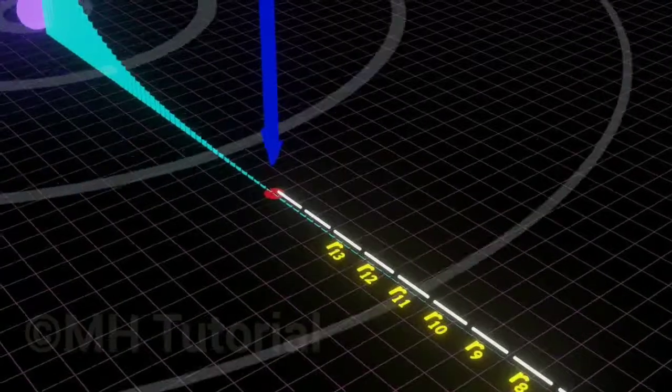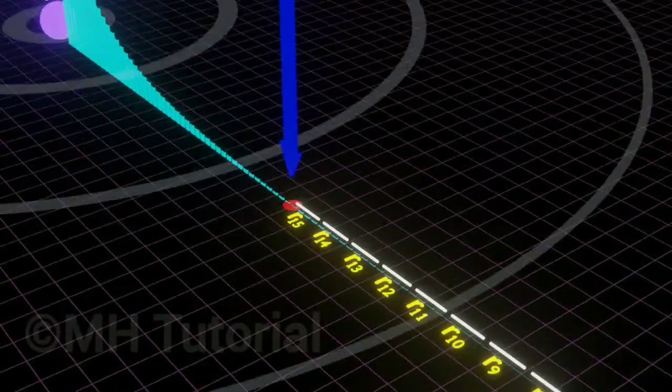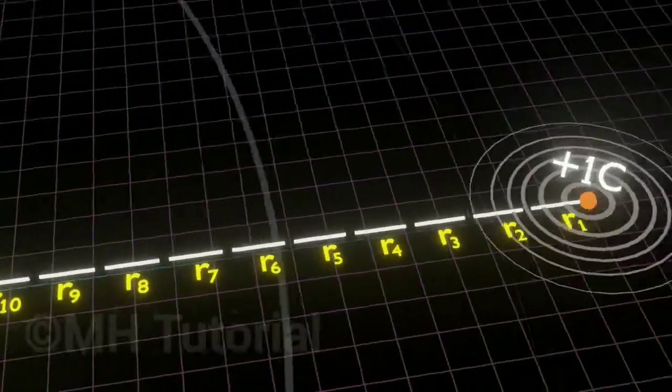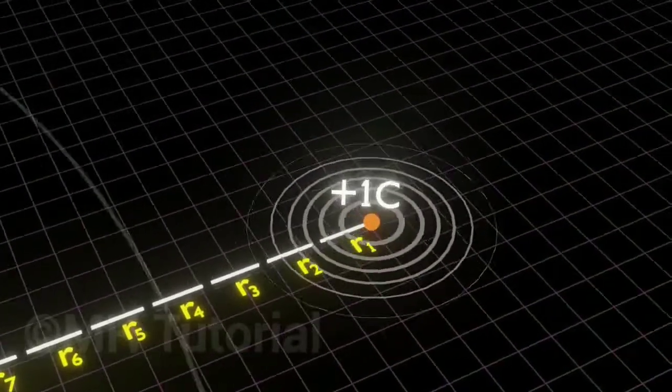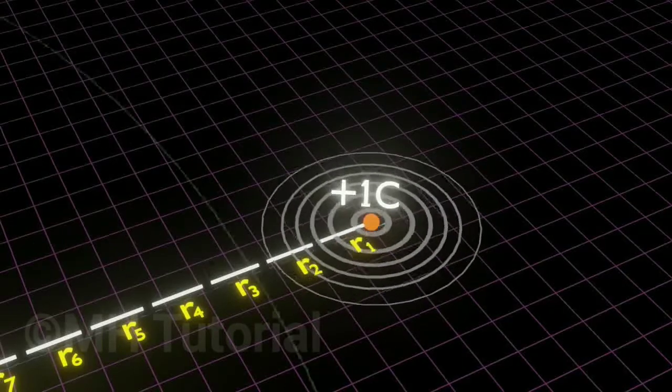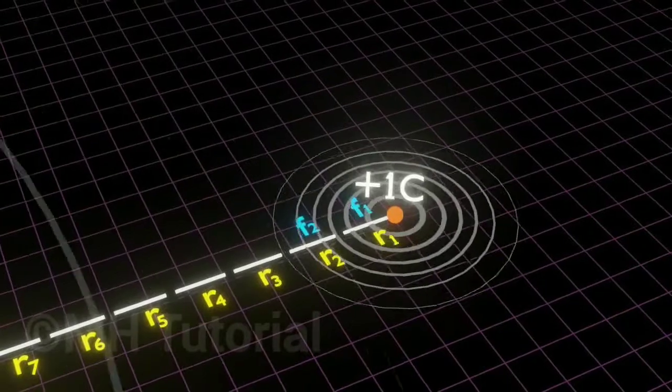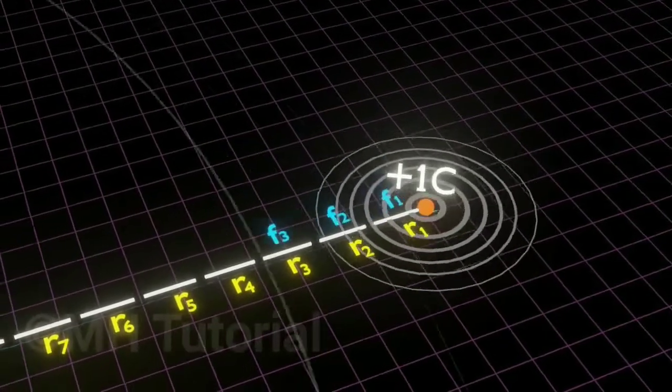A shorter segment can bring accuracy in calculation but at the cost of a huge number of segments. Let the average value of the repulsive force throughout the path R1 be F1, throughout R2 be F2, throughout R3 be F3, and so on.